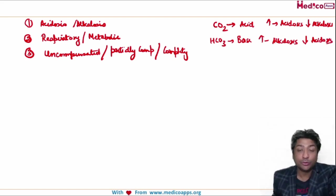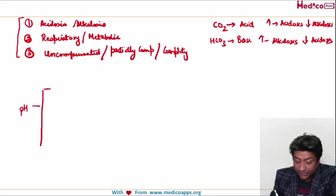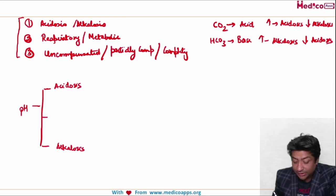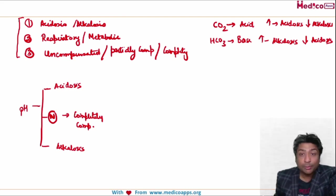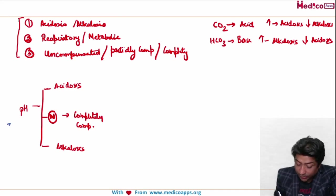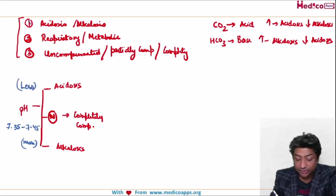Now I will introduce you to the algorithm to answer these three questions, and any ABG question will be a cakewalk. The first thing you should look at whenever an ABG is given is the pH. The moment you look at the pH you can easily tell if it is acidosis or alkalosis. If the pH is normal then whatever the pathology, it is completely compensated. The normal pH is 7.35 to 7.45. If the pH is more than 7.45 it is alkalosis; if less than 7.35 it is acidosis. Your first question is answered.